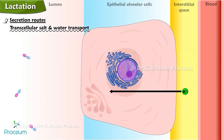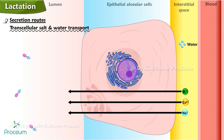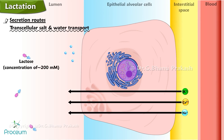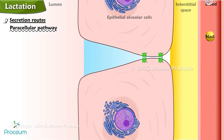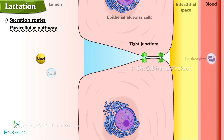In the transcellular salt and water transport pathway, a variety of transport processes at the apical and basolateral membranes move small electrolytes from the interstitial fluid into the lumen of the alveolus. Water follows an osmotic gradient generated primarily by lactose, present at a final concentration of 200 millimoles, and to a lesser extent by electrolytes. In the paracellular pathway, salt and water can also move into the lumen via the tight junctions. In addition, cells — primarily leukocytes — also squeeze between cells and enter the milk.